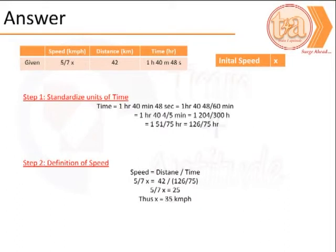To solve the problem, we begin with looking at the information we have. Assuming the initial speed is X, the speed in consideration is 5/7 of this initial speed, that is 5/7 X.